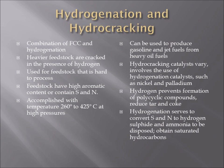Another process used in the refining process to break down large hydrocarbons is called hydrocracking. This involves the combination of catalytic cracking and hydrogenation. Typically, this is used for heavier feedstock that is hard to process with different methods, and these feedstocks often contain a high aromatic content, or they contain the elements sulfur and nitrogen. These could be cracked with temperatures around 260 to 425 degrees Celsius at high pressures.